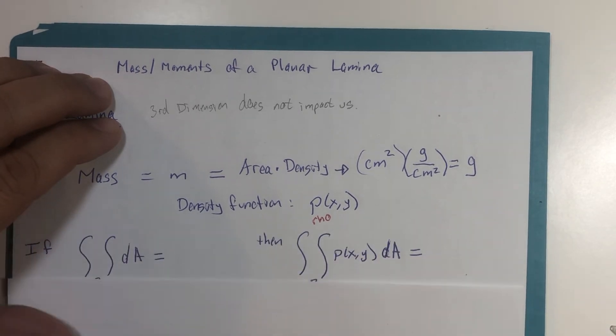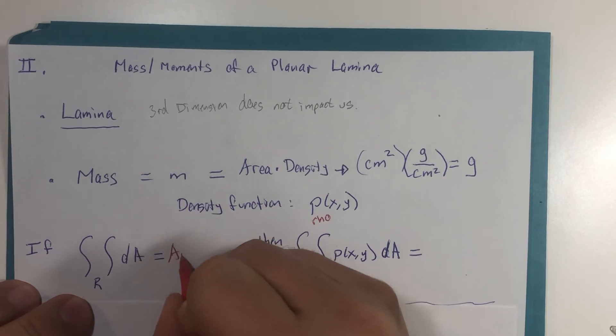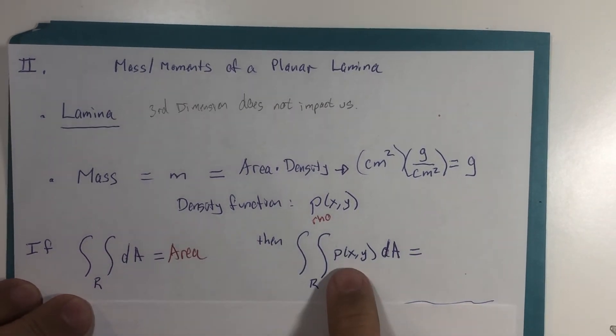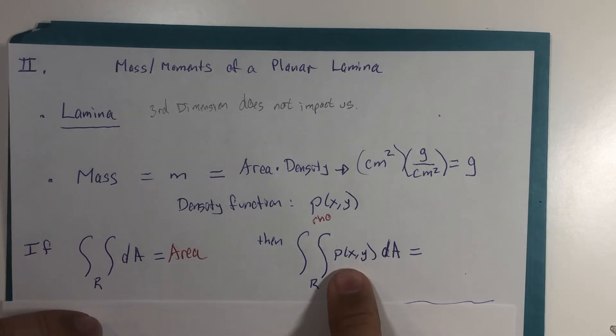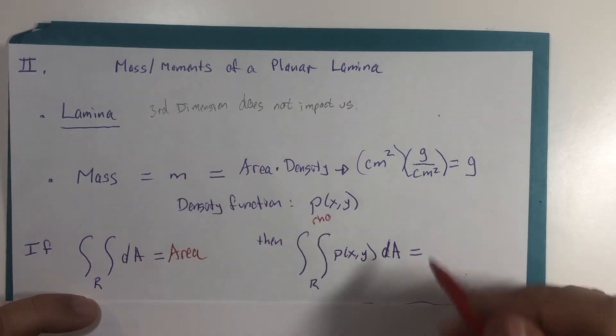If you have a double integral with respect to A and it could measure the area, then we would think of this integral as kind of like multiplying every point in our region by a density value. It's very similar to this calculation that gives us mass.